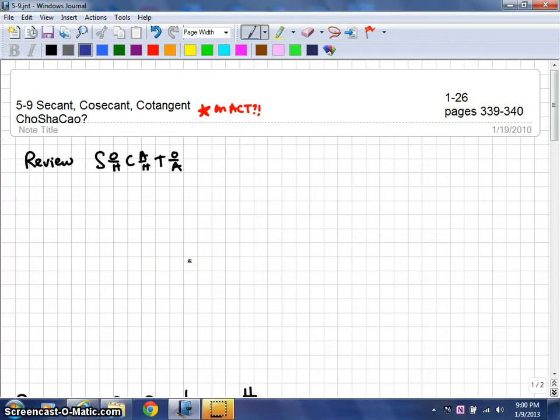This lesson is lesson 5.9 for FST, and the title of the lesson is secant, cosecant, and cotangent. These are three additional trig functions that are also contained on most ACT tests.